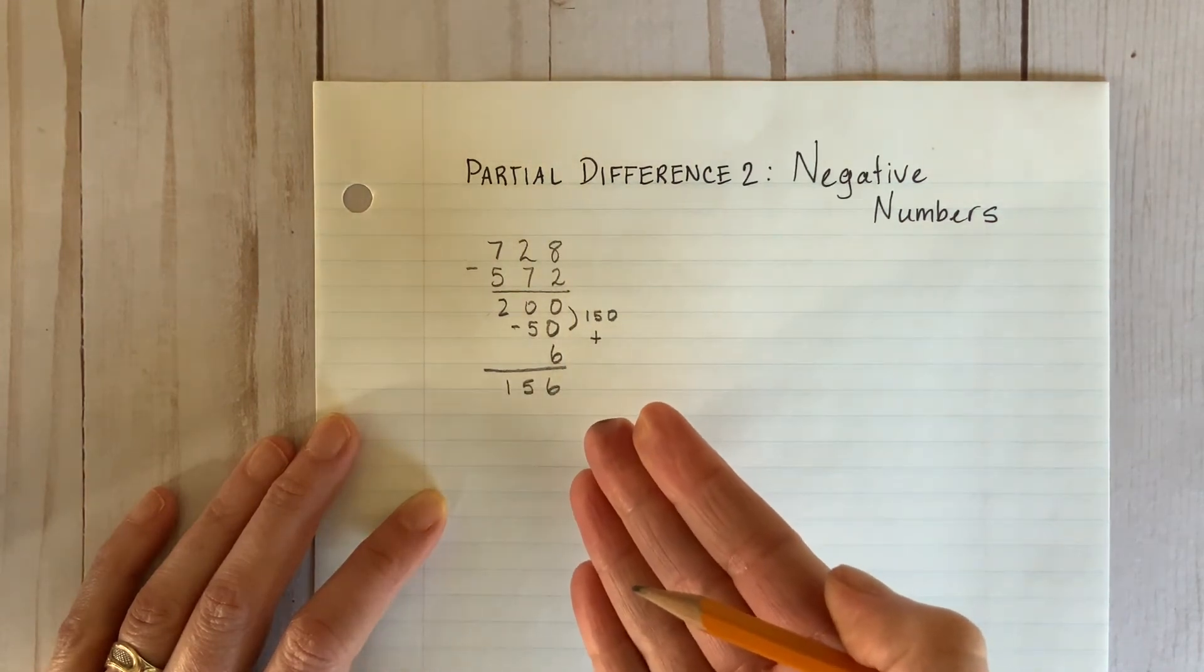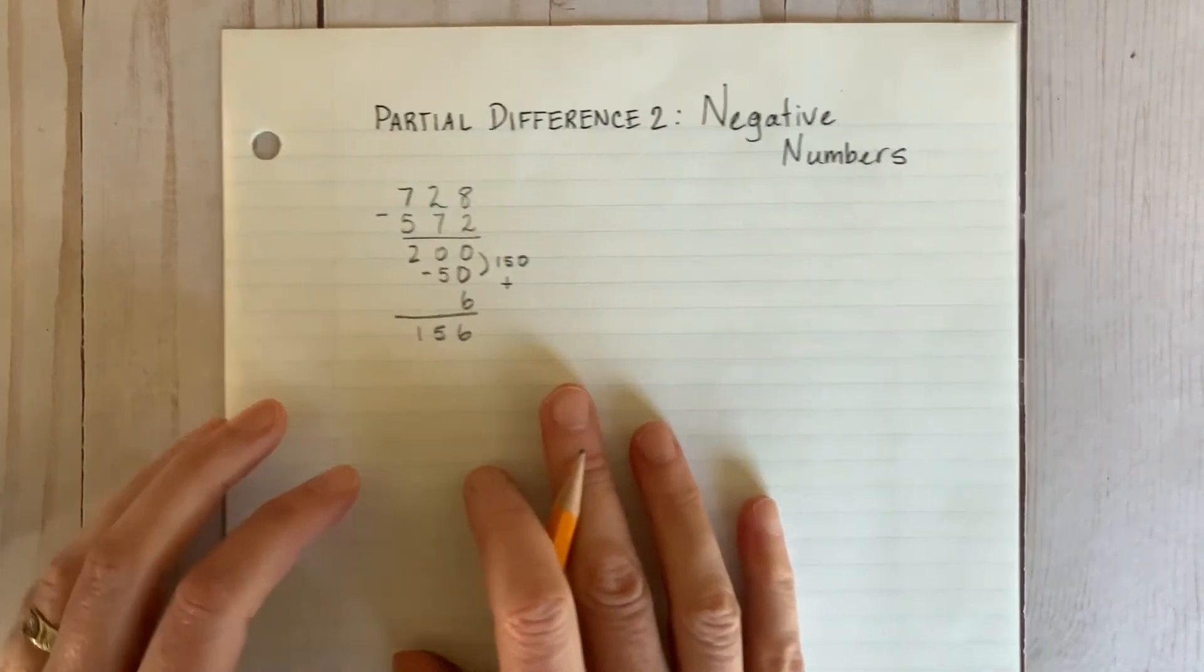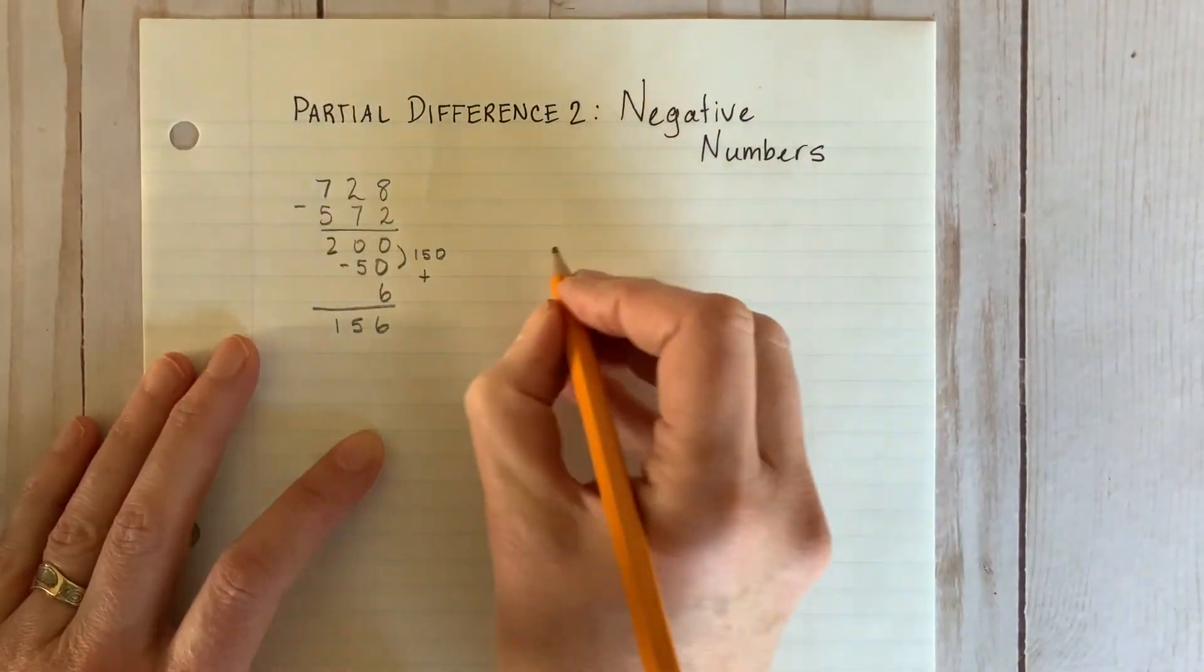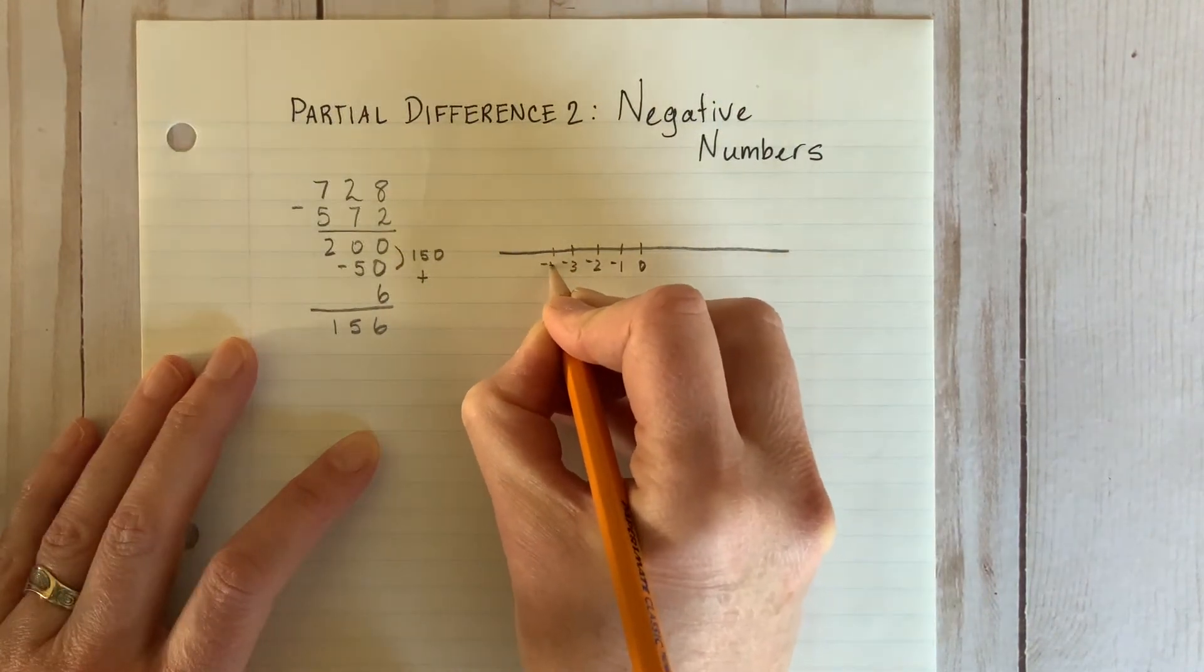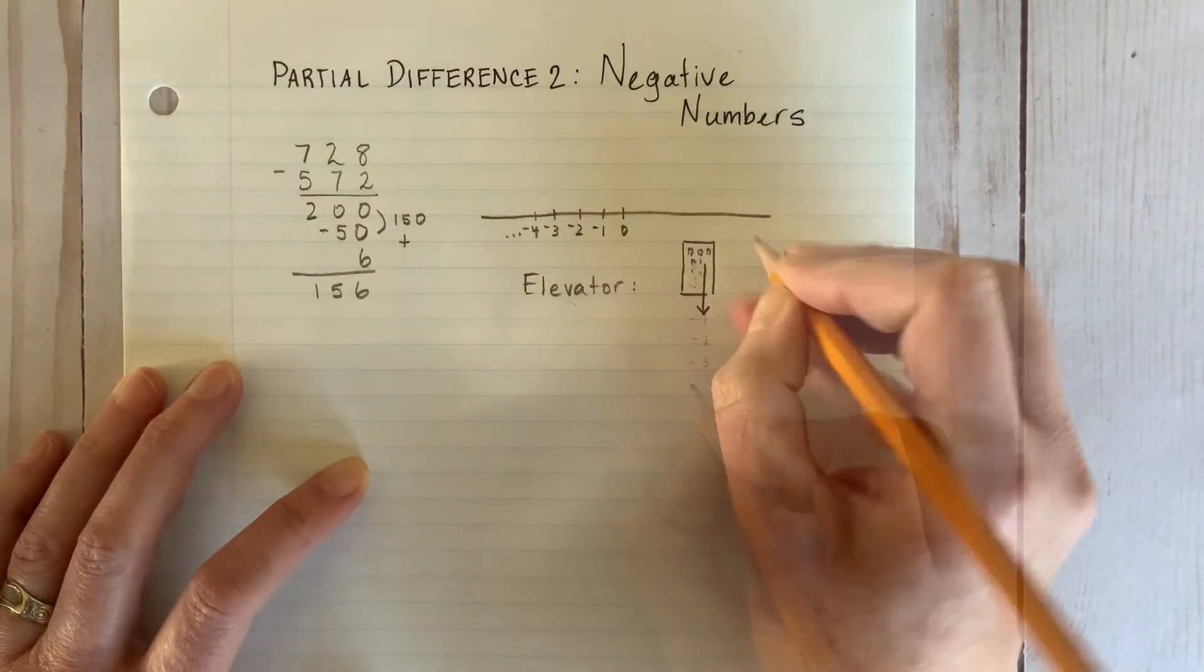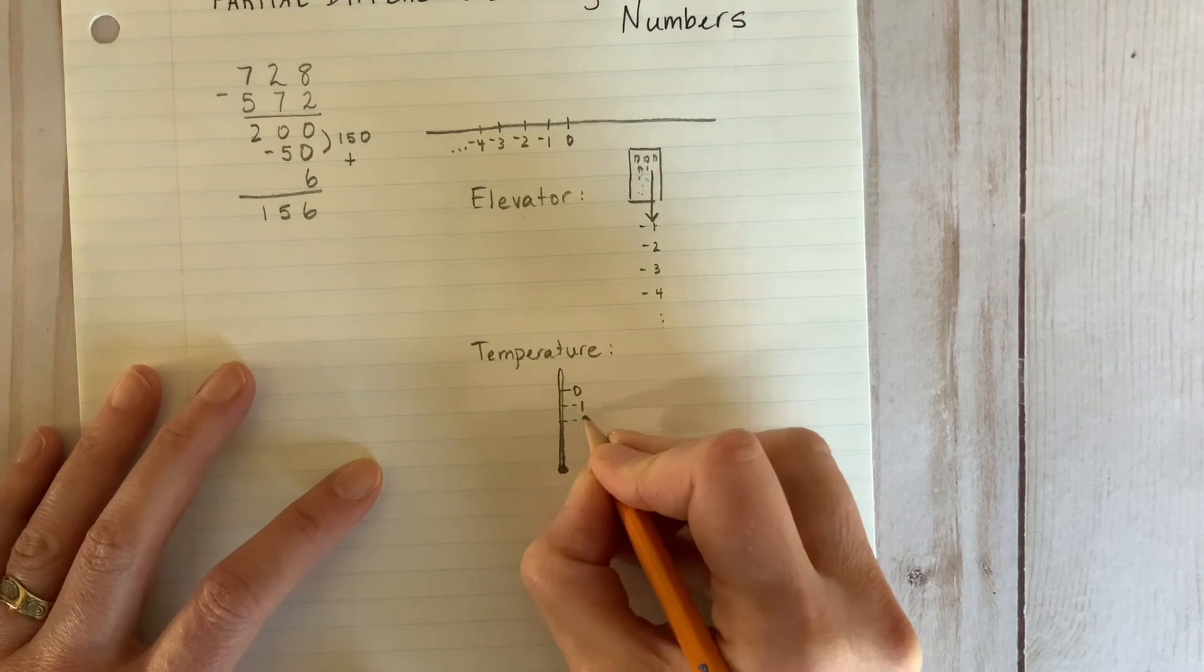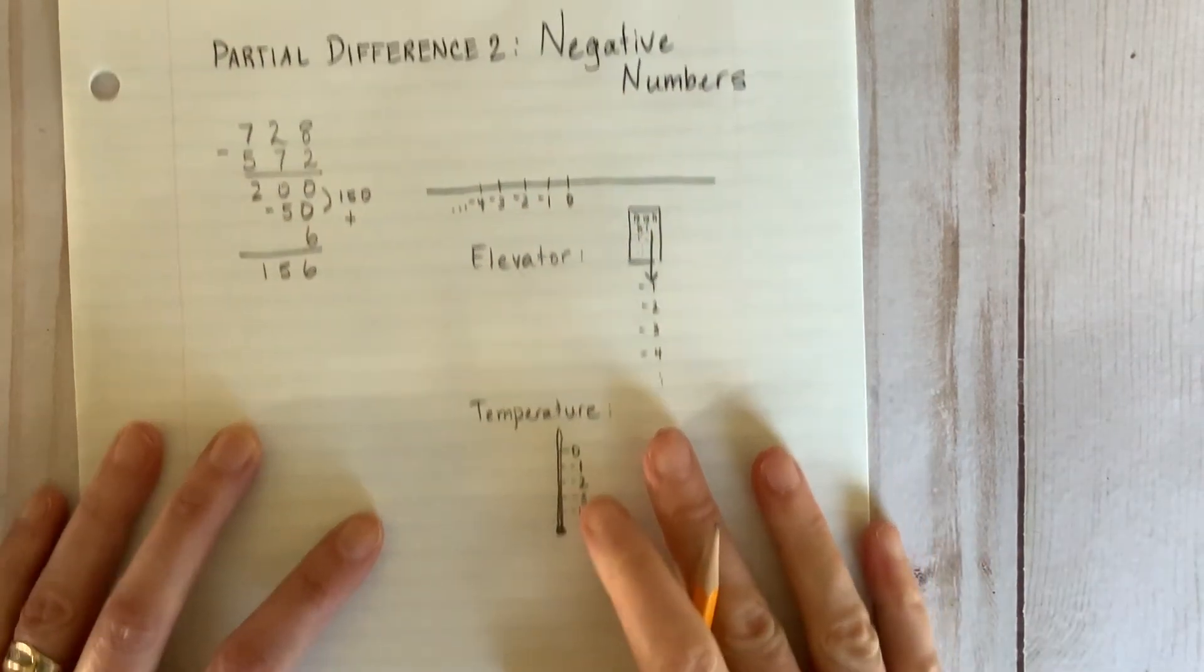Now, the obvious disadvantage to this method is that you need to teach your child about negative numbers. You should draw and count numbers using number lines that go into the negative. You might use the analogy of an elevator going underground or a thermometer with temperatures dropping below zero. Just know, however, that negative numbers are not in the BC school curriculum until grade 7, so there's no need to push it.